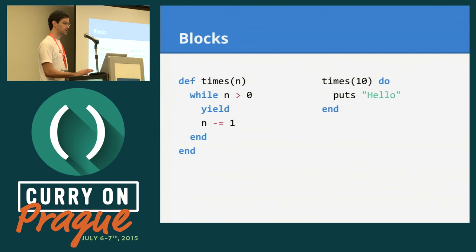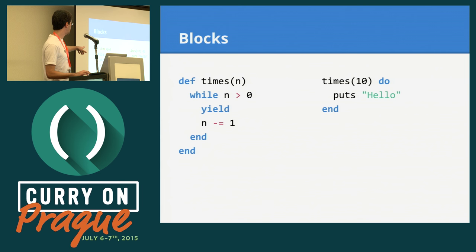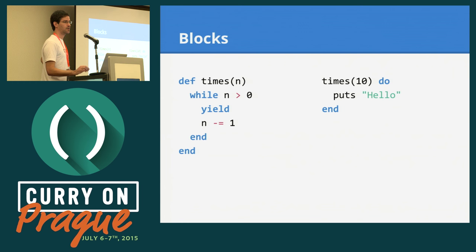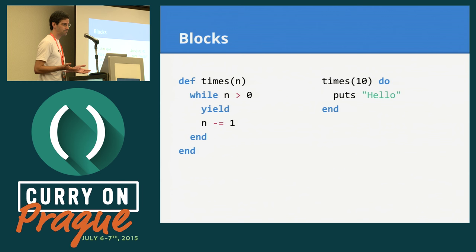Just like in Ruby, methods can accept blocks. On the left-hand side we have a method declaration; on the right-hand side we have some code invoking it. With the yield keyword, we execute the block that's passed. The right code looks really expressive. Importantly, Crystal will always inline these kinds of blocks, so if you write a while loop or write it like this with a block, the generated code will be the same — there's no performance penalty. You can be expressive but not sacrifice performance.